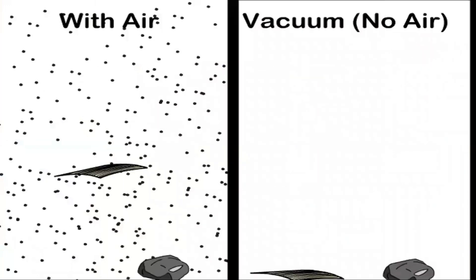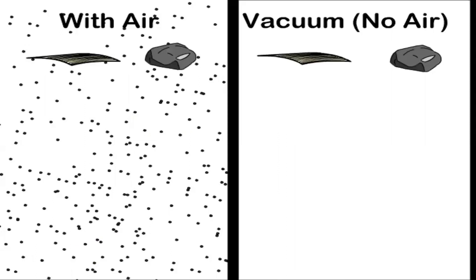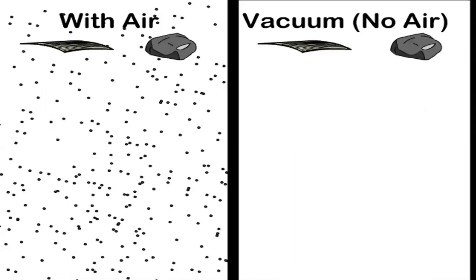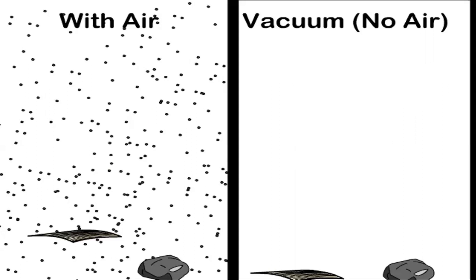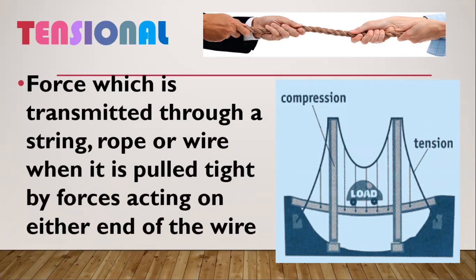A special type of friction is called air resistance — it occurs when an object is traveling through air. Based on experiments done by scientists, when there is no air resistance, whether the object is light or heavy, both will reach the ground at the same time. Another contact force is tensional force — the kind of force transmitted through a string, rope, or wire whenever they are pulled tightly. This principle is used in making hanging bridges.